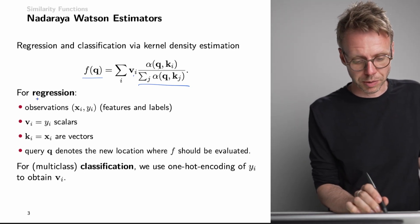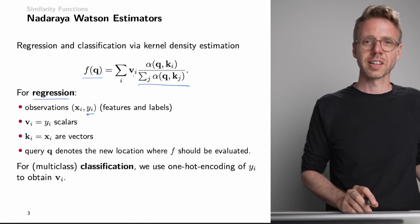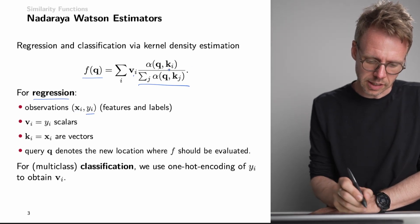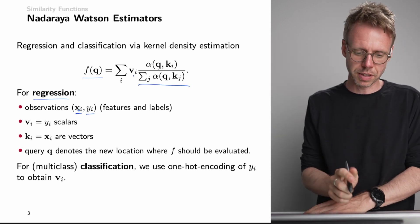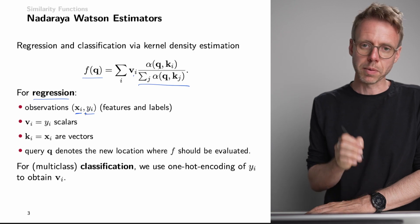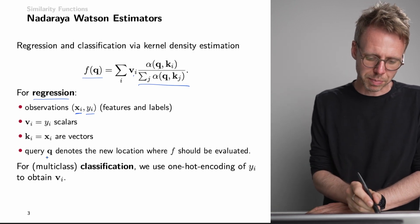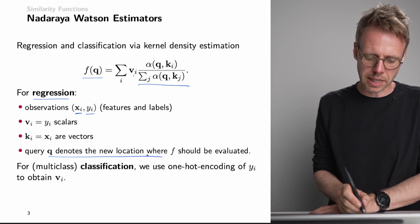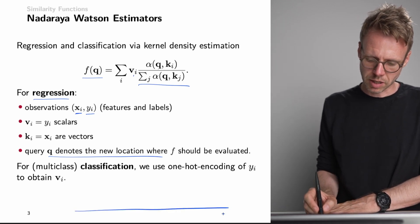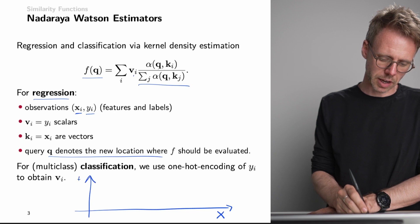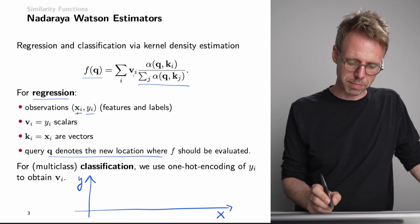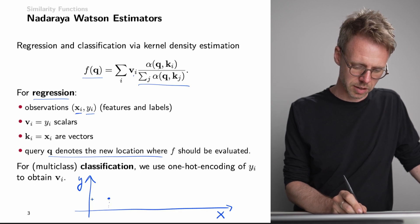This can be used for regression if our values are the regression labels. In this case, our keys would be the inputs — the input vector x — and y would be our regression label, and the query would be the new location where we want to evaluate our function. Let's visualize this for a one-dimensional function: here we have our input dimension x and we want to regress y. We have n pairs of inputs x and y values.